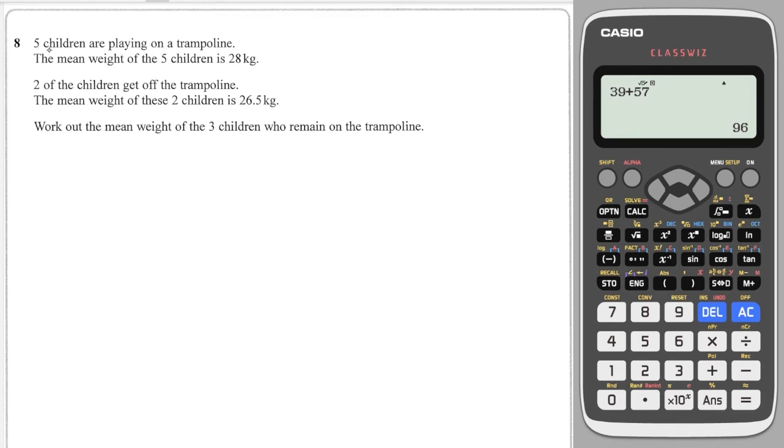Here is another question where we need to work out the totals. So five children are playing on a trampoline. The mean weight of the five children is 28 kilograms, so we can say total of the five divided by five was equal to 28. Multiplying both sides by five gives us that 28 times five is 140, so the total weight of all of these children is 140.